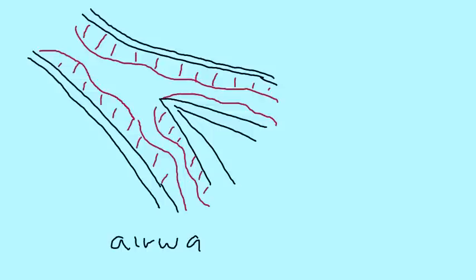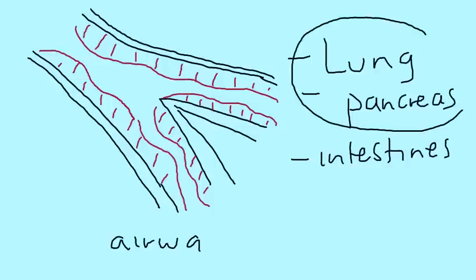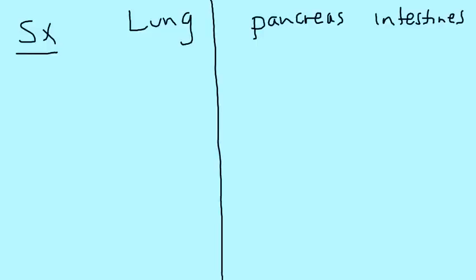This similar type of process happens in ducts all over the body, in any type of exocrine gland. And those glands include the lung, pancreas, intestines, and other things as well, like reproductive organs. But we're going to concentrate just on, really, these two here, the lung and the pancreas, when I talk about symptoms and treatment. So let's get into that. Let's get into the symptoms.